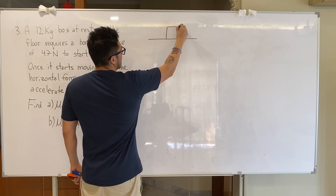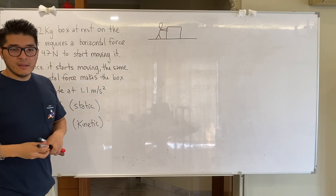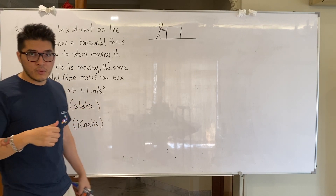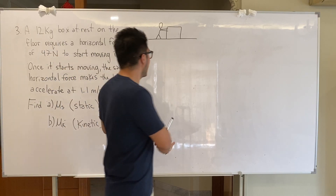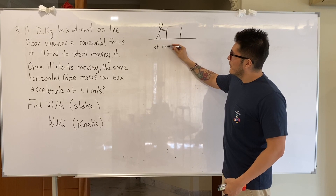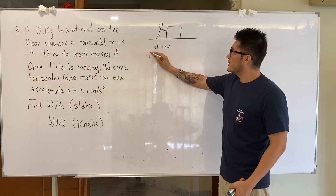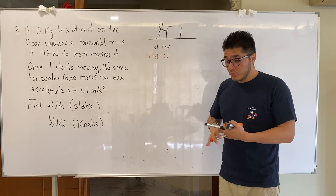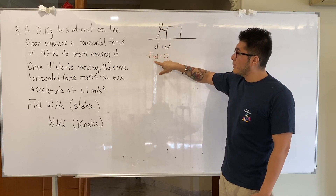Let's draw a free body diagram for the first case — finding the coefficient of static friction. Static means not moving, so you're pushing but the box isn't moving. If the object is at rest, that gives us a key hint: the net force acting on the object has to be zero.